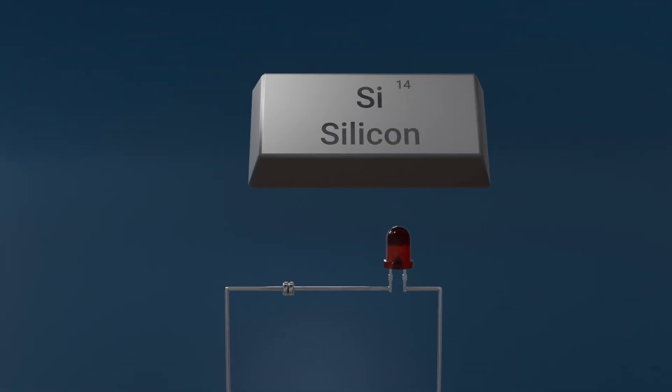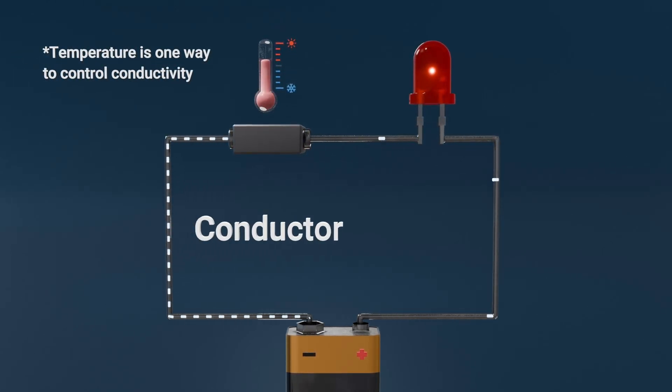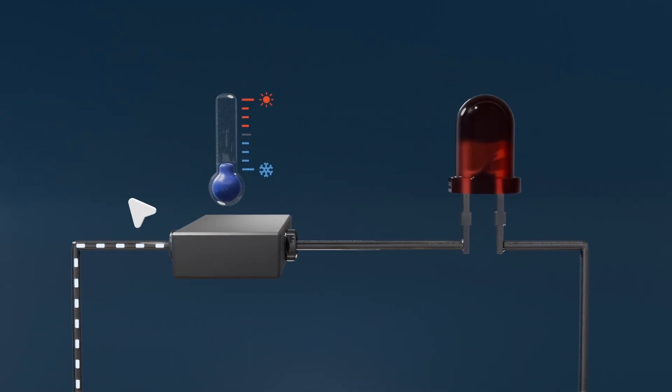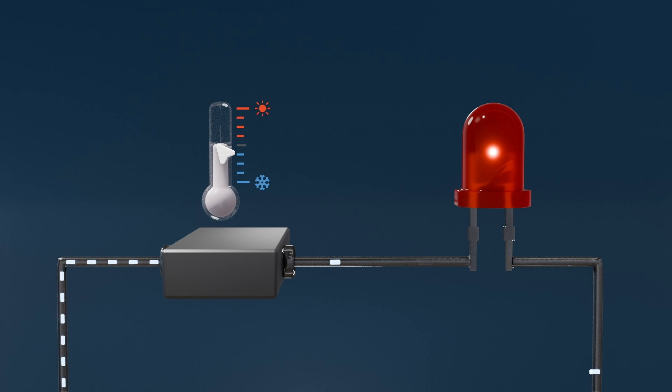At its core, a semiconductor is a material that has electrical conductivity between that of a conductor and an insulator. This unique property allows it to control the flow of electrical current, making it fundamental in electronic circuits and beyond.